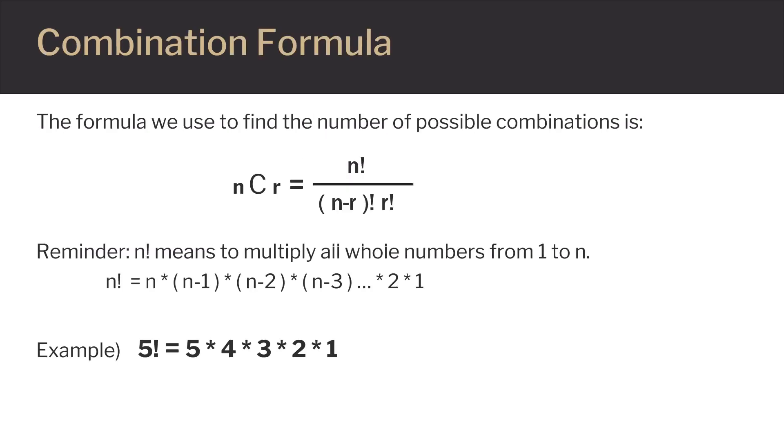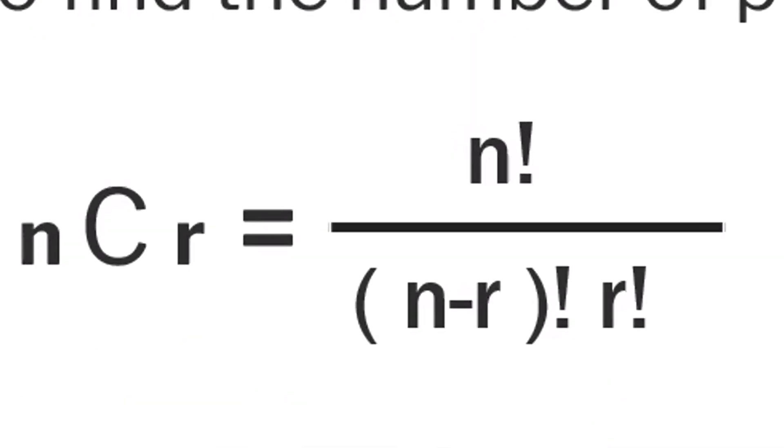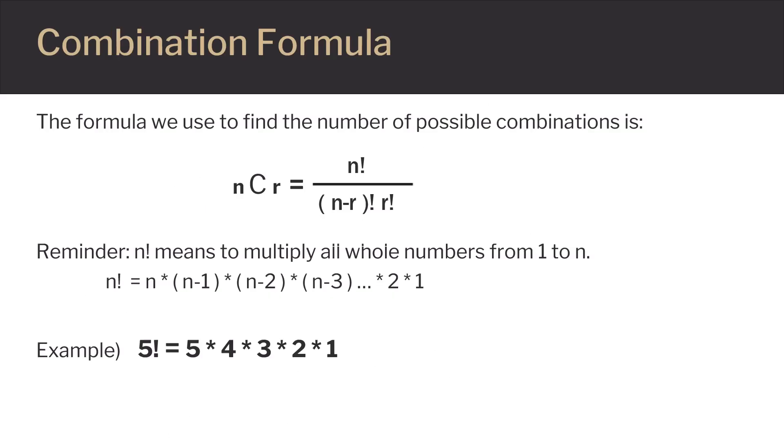Here is the formula we use to find the number of possible combinations. In this formula, we are choosing r items from our larger group of n items. The formula is a fraction. On top is n with an exclamation point after it, which in math means n factorial.